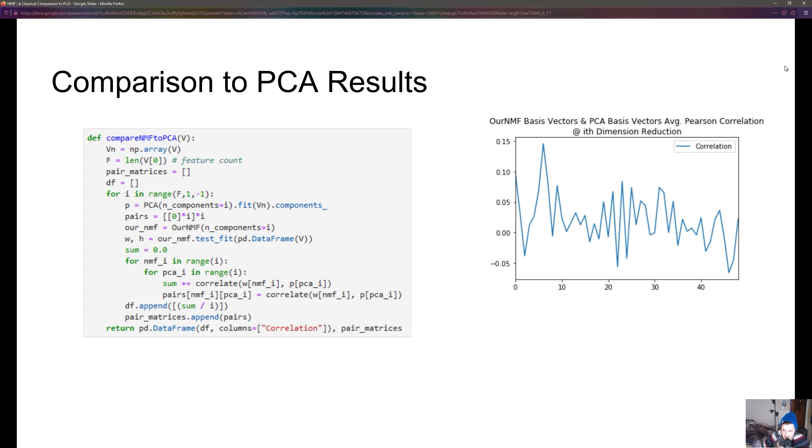The graph on the x-axis is showing each iteration of dimensionality reduction and the average correlation value of all basis vectors combined.